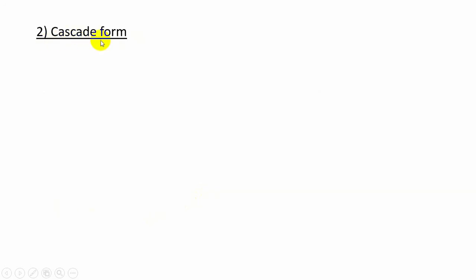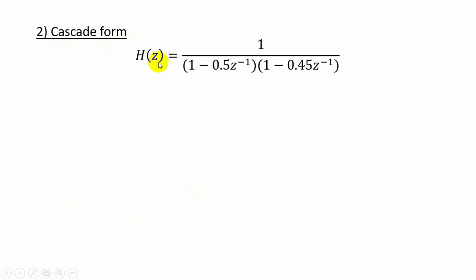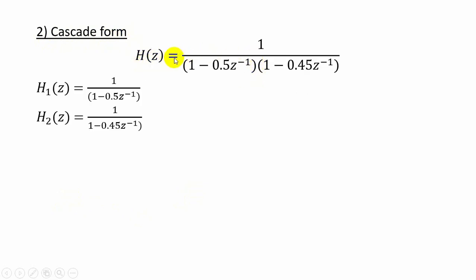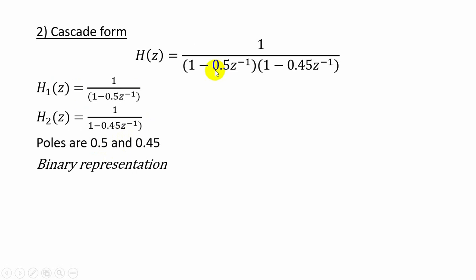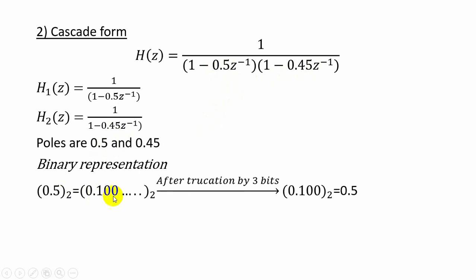Now we will see the effect of coefficient quantization in cascade form realization. The transfer function is given, and here we consider H(z) as the product of H1(z) and H2(z). So H1(z) is 1 by (1 minus 0.5 z-inverse) and H2(z) is 1 by (1 minus 0.45 z-inverse). The original poles are 0.5 and 0.45. For 0.5, the binary equivalent truncated to three bits gives 0.100, whose decimal equivalent is also 0.5.